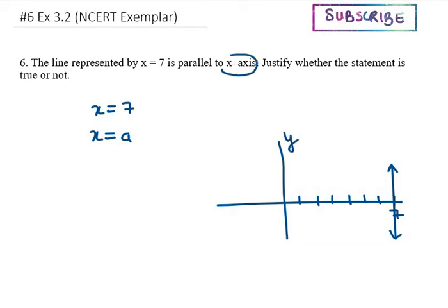So the statement here is wrong. This should be y-axis here. This statement is false. If you want to write a correct sentence, it will be: the line represented by x equals 7 is parallel to the y-axis, not the x-axis.